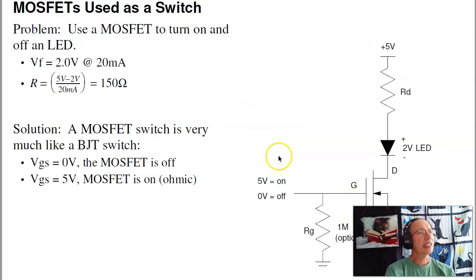As an example of how to do that, suppose I want to turn on and off an LED. In that case, first I have to find the LED that I want. Here I just picked a red LED. The forward voltage is 2 volts at 20 milliamps, and the resistance that I need is 150 ohms. I want to push 20 milliamps through this LED.